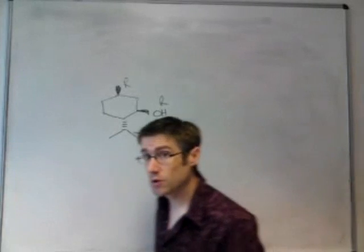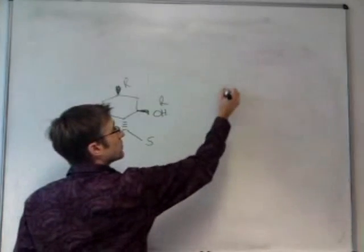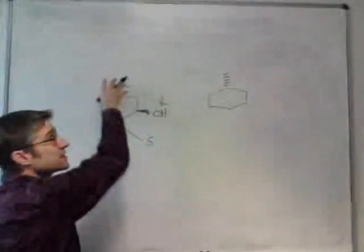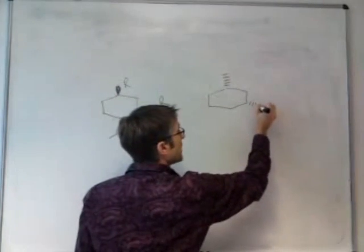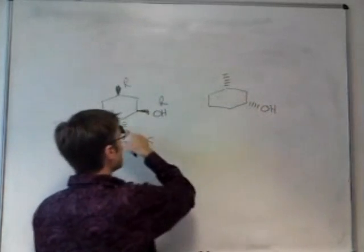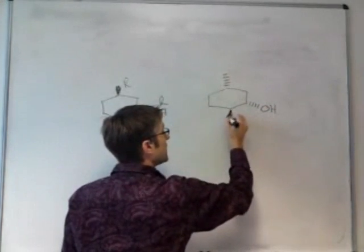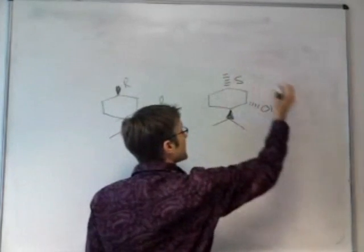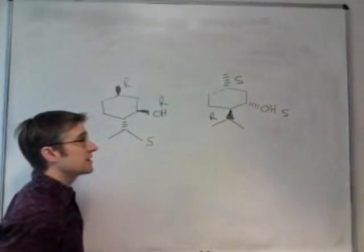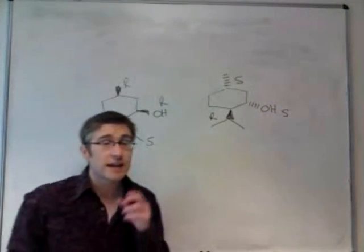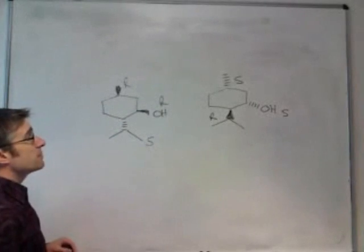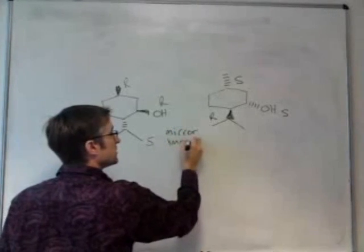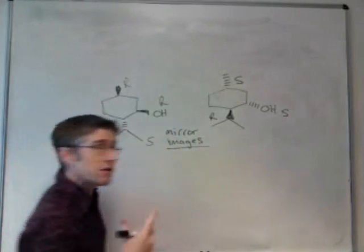The first stereoisomer we'll consider is the one where each of those chiral centres is inverted. The methyl group goes back instead of forwards. The OH goes back instead of forwards. And this group here comes forwards instead of back. This would be the SSR stereoisomer. Each stereocenter is inverted. And the relationship between these molecules is that they are mirror images.